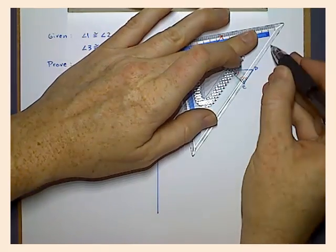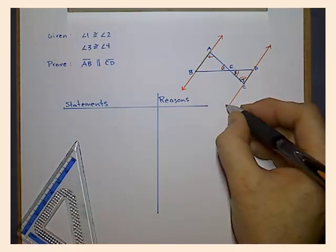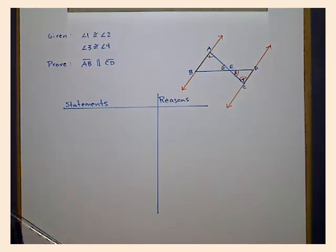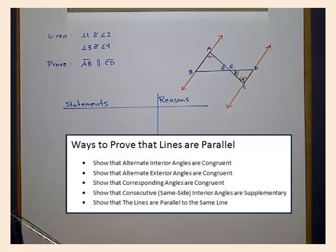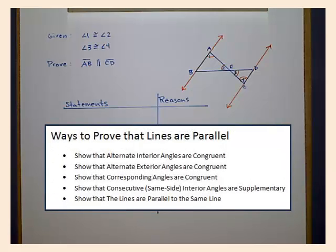Extending them also helps our brain recall the facts that we know about parallel lines. We can recall that there are five major ways to prove that lines are parallel. You can show that the alternate interior angles formed by a transversal are congruent.